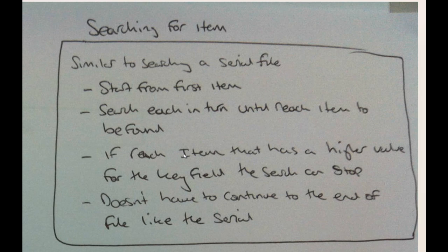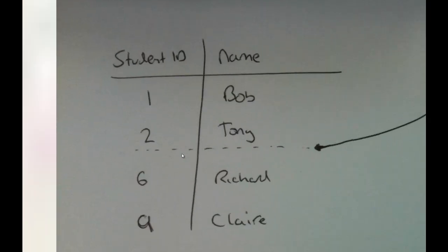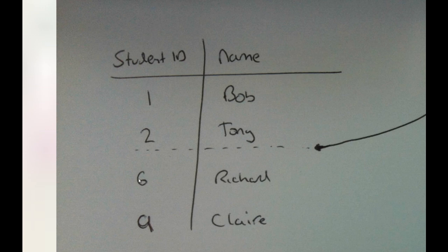To search a sequential file, it's very similar to a serial file — we start from the first item and search each in turn until we reach the item or find it. However, if we reach an item with a higher key field value than what we're searching for, we can stop. Unlike a serial file, we don't have to search all the way through. For example, searching for student ID 5: we go 1, 2, then reach 6 — we know 5 isn't there and there's no need to continue to Claire's record.